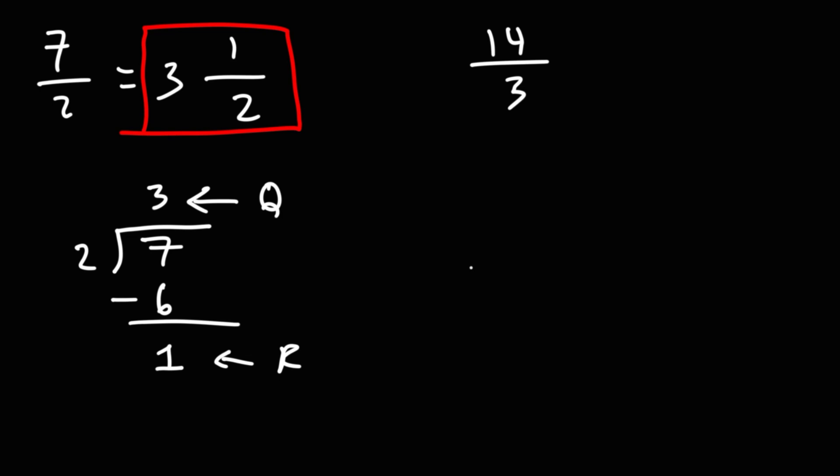Let's do the same for the second example. So 14 divided by 3, the 3 is going to go on the outside, the 14 will go on the inside. How many times does 3 go into 14? 3 goes into 14 four times. 3 times 4 is 12. 14 minus 12 is 2.